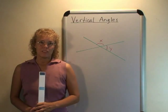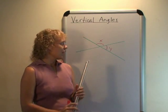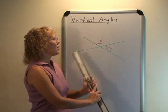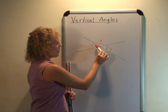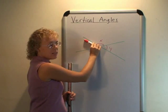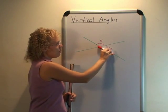Vertical angles are formed when you have two lines that intersect each other, like on the board. I do two lines, one this way, one this way. They intersect and there are four angles formed here. One is here. From here to here is one angle, here to here is another angle, and here to here is another angle, and then fourth one here.